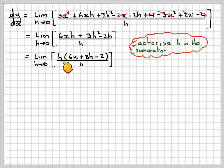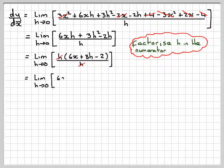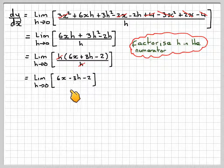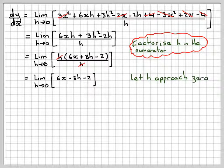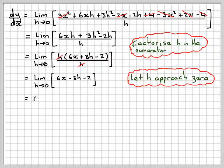Now because h is very close to 0 but not 0, these h's can cancel. We get the limit as h goes to 0 of 6x plus 3h minus 2. Now we let h equal 0. This bit here, 3 times something very small is very small, so we'll just ignore it. We're left with the derivative, which is 6x minus 2.